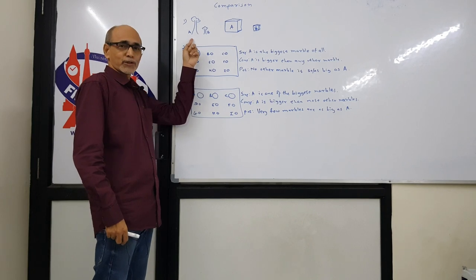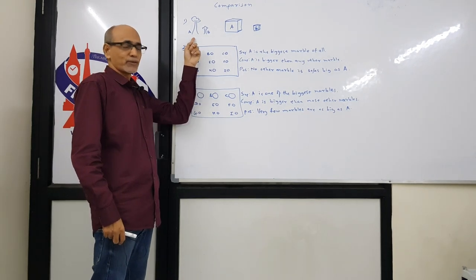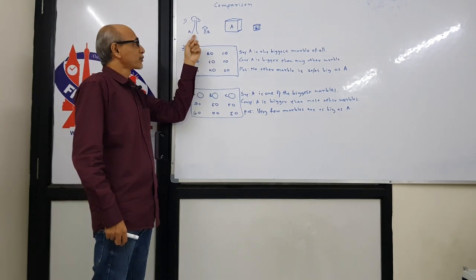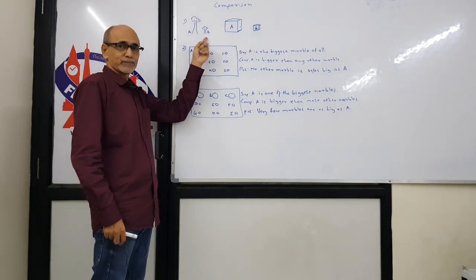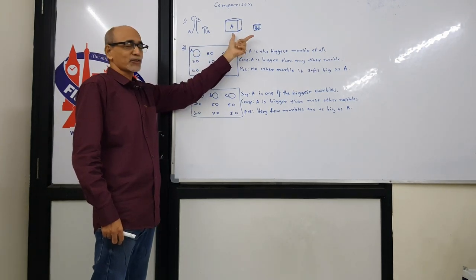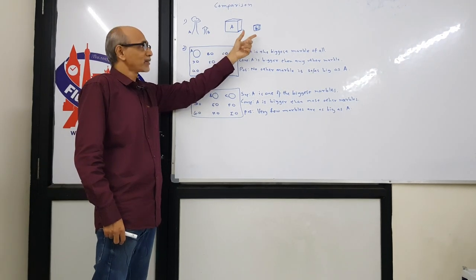In the first situation, there are only two items. You can see there are two trees here. Tree A is taller than tree B. Similarly, here you can see two boxes. Box A is bigger than box B.